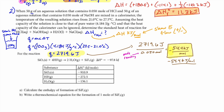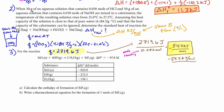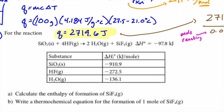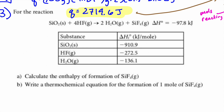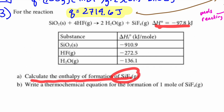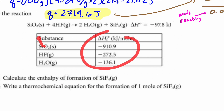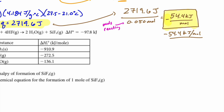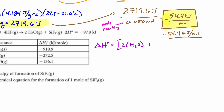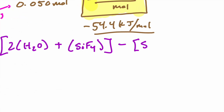Number three: the reaction is SiO₂ + HF → H₂O + SiF₄. It gives enthalpy of formation values for specific compounds and asks you to calculate the enthalpy of formation of SiF₄. When you see values for specific compounds, think products minus reactants. ΔH_reaction = [2·ΔHf(H₂O) + 1·ΔHf(SiF₄)] − [1·ΔHf(SiO₂) + 4·ΔHf(HF)].